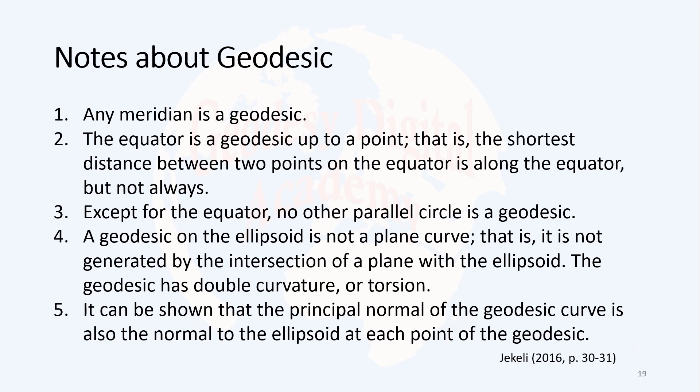The geodesic has double curvature or torsion. It can be shown that the principal normal of the geodesic curve is also the normal to the ellipsoid at any point of the geodesic. But it is not the case for the normal section. For the normal section, the only normal to the curve is at the first point that we consider for the vertical plane or normal plane for creating the normal section.